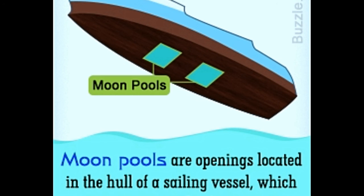Moon pools are specially engineered holes and openings made at the bottom of a ship's hull. They are designed to allow divers, sailors, and instruments easy access to the water below, while taking care not to let water enter inside and sink the ship.